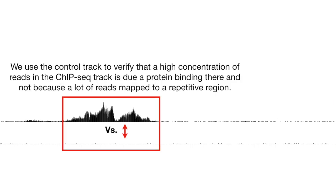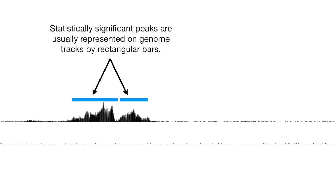We use the control track to verify that a high concentration of reads in the ChIP-seq track is due to a protein binding there, and not because a lot of reads map to a repetitive region. Statistically significant peaks are usually represented on genome tracks by rectangular bars.